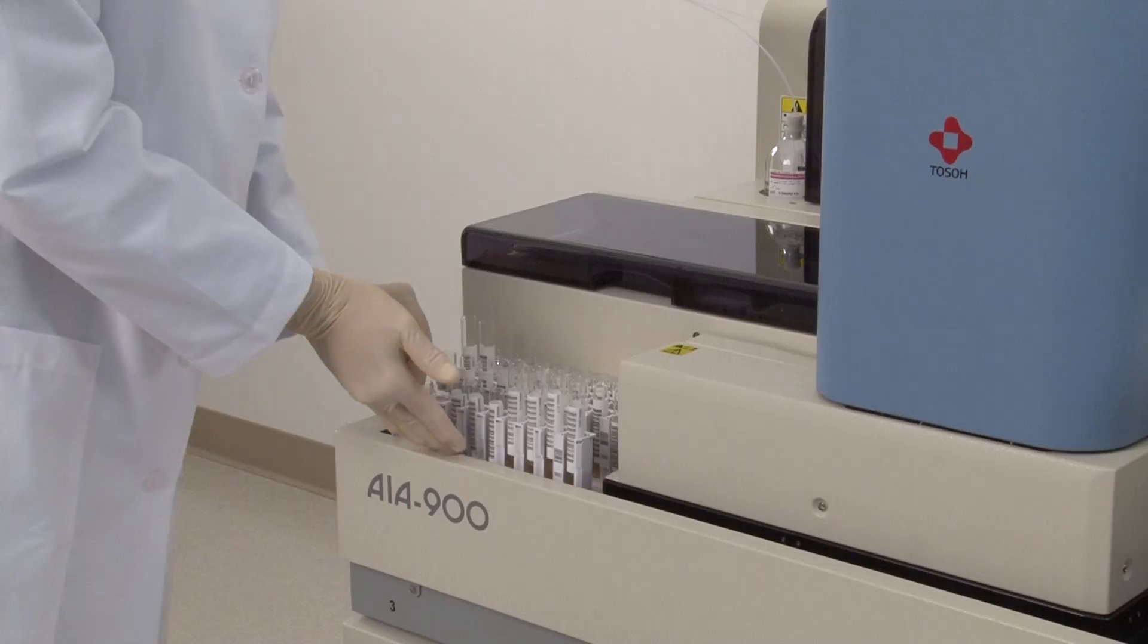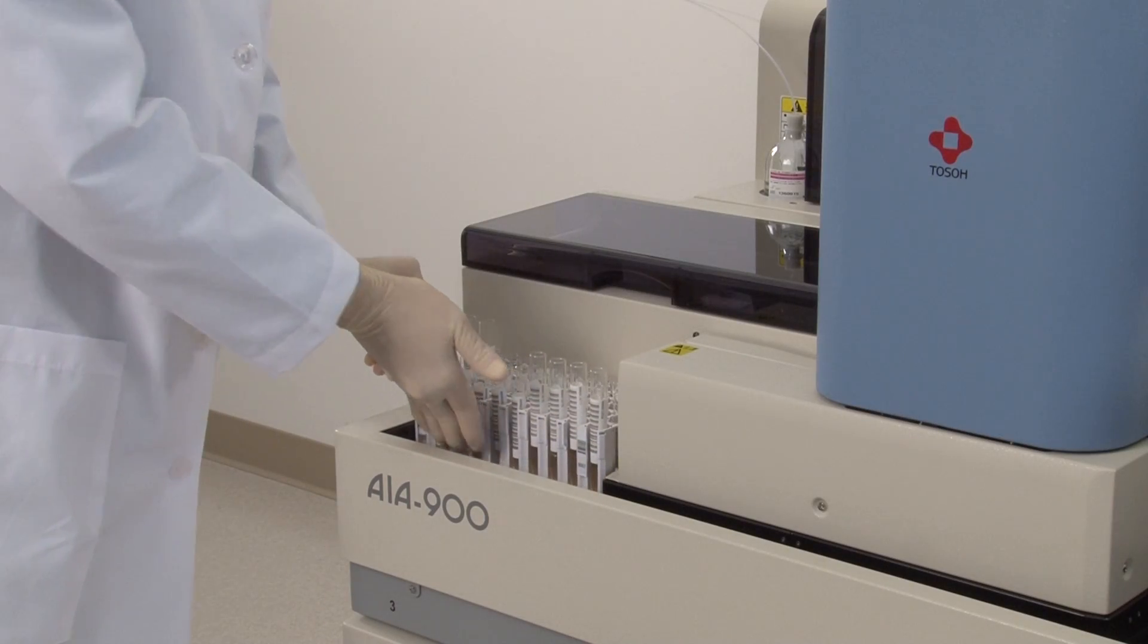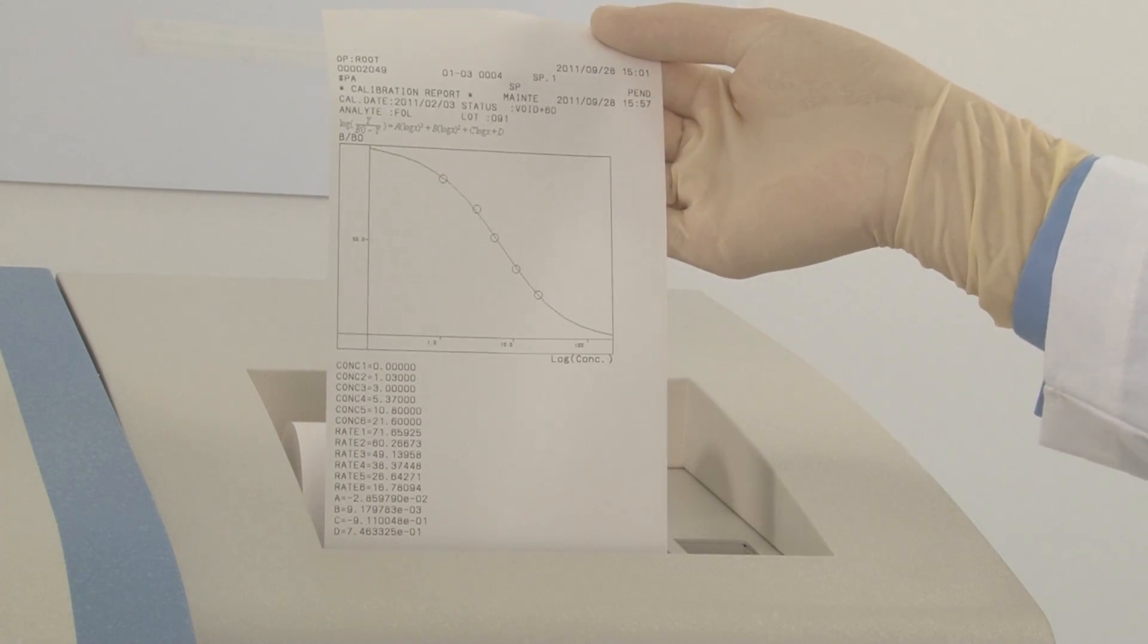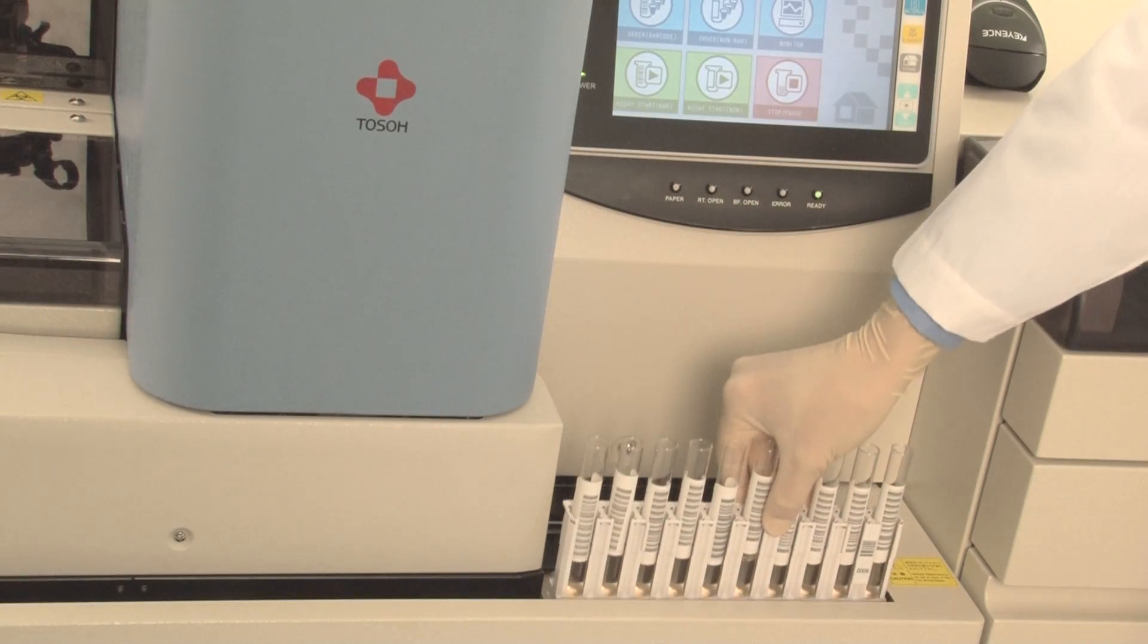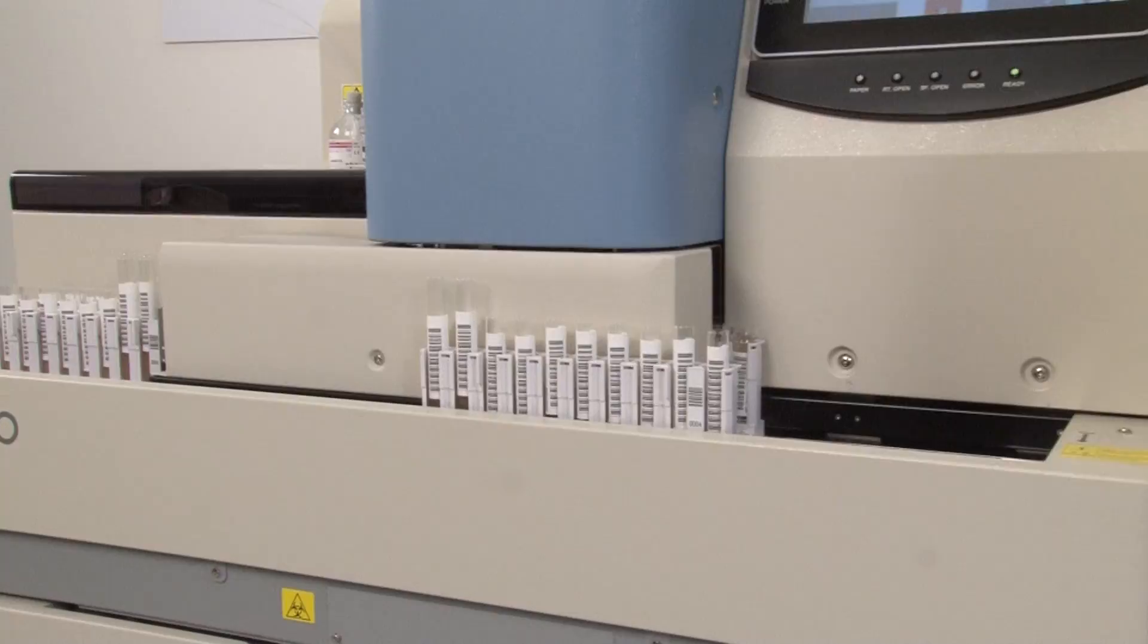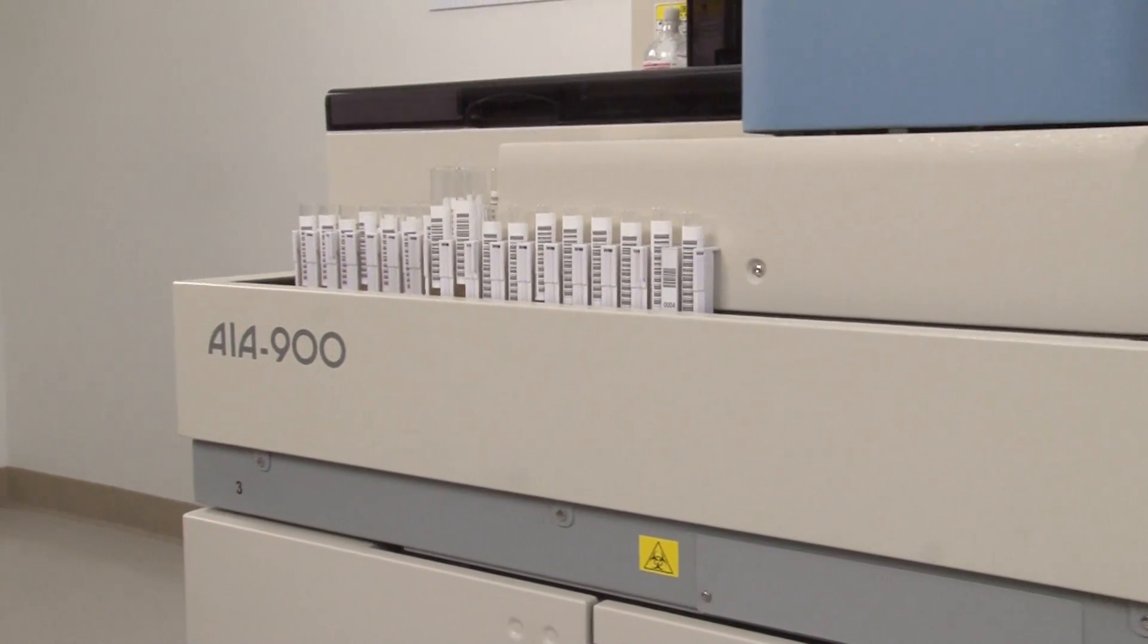The AIA 900, a superior design with faster results and higher throughput, helps the operator soar through their immunoassay testing. Primary tube sampling, STAT performance,